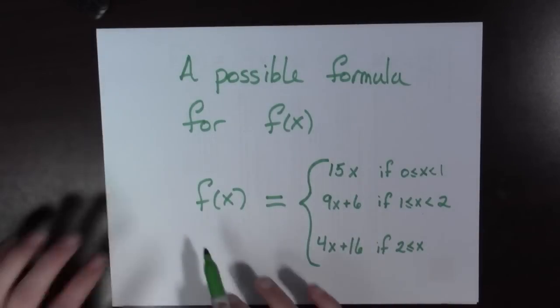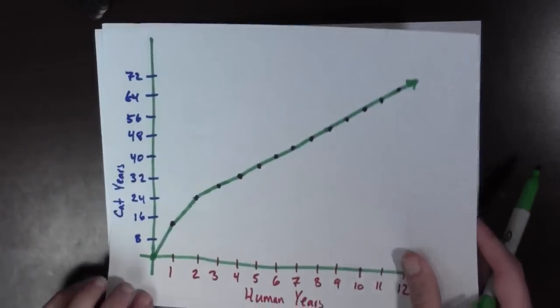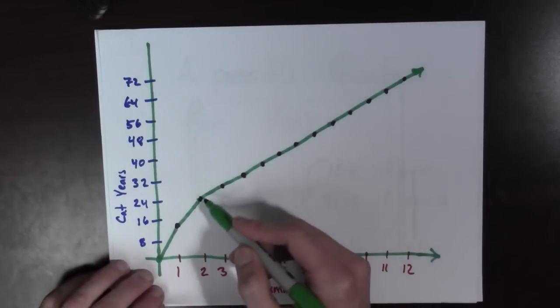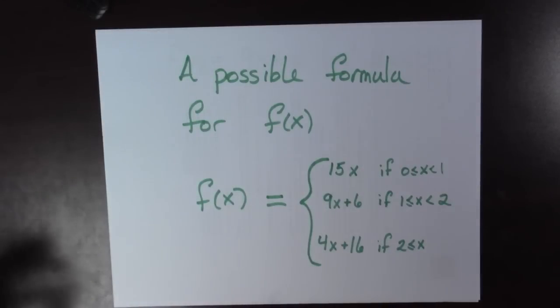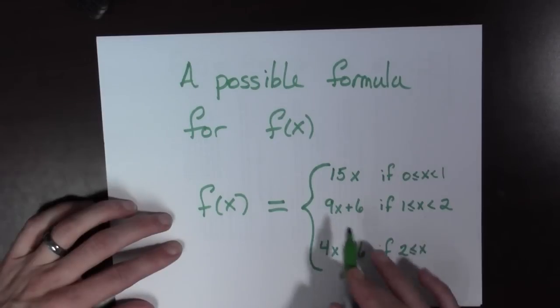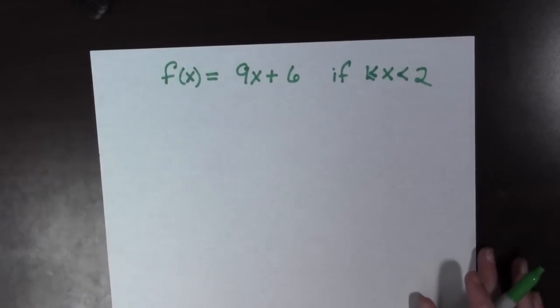And f of x equals 4x plus 16 if 2 is less than or equal to x. Alright. And that's this part of the graph. Now, remember, Roxy is 1.3 human years old. So, that's this formula here. So, let's go to the next page.